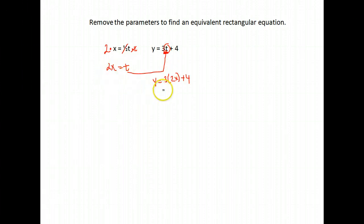And then you simplify. 2 times 3 is 6x plus 4. Perfect.